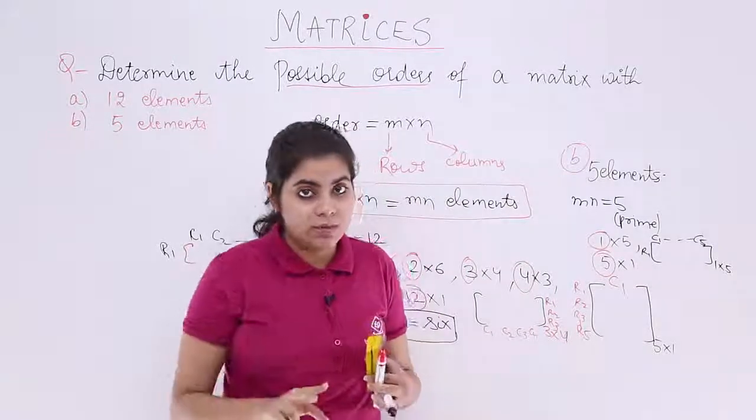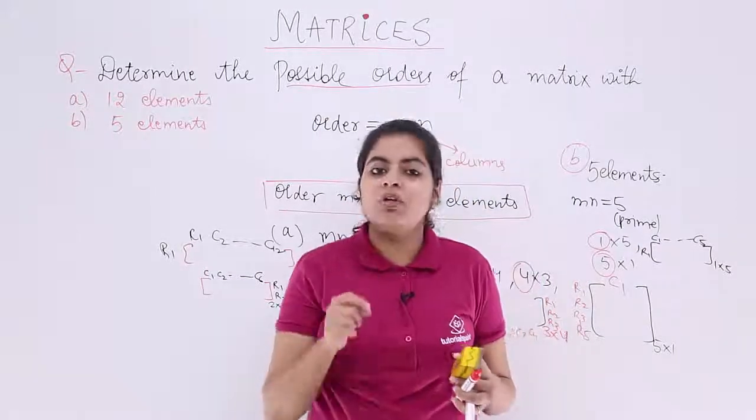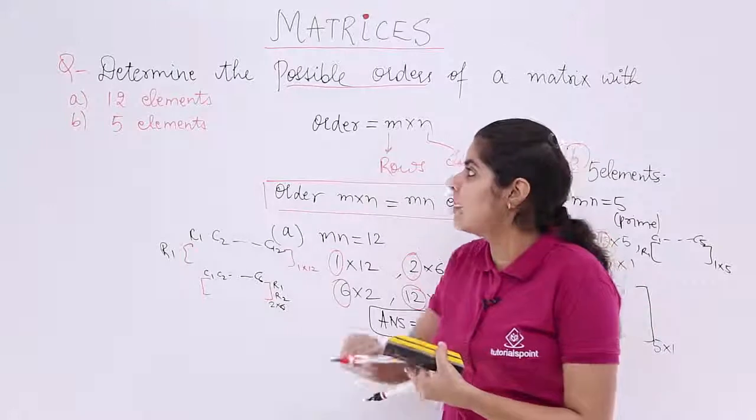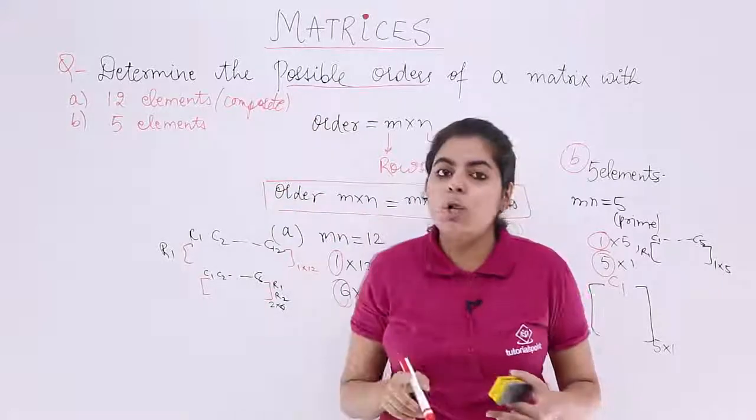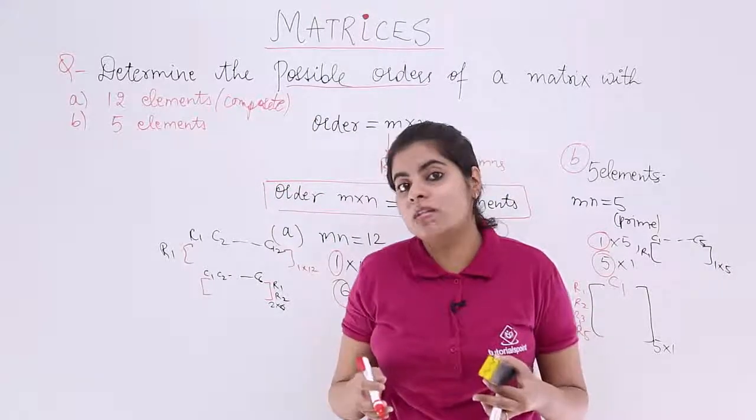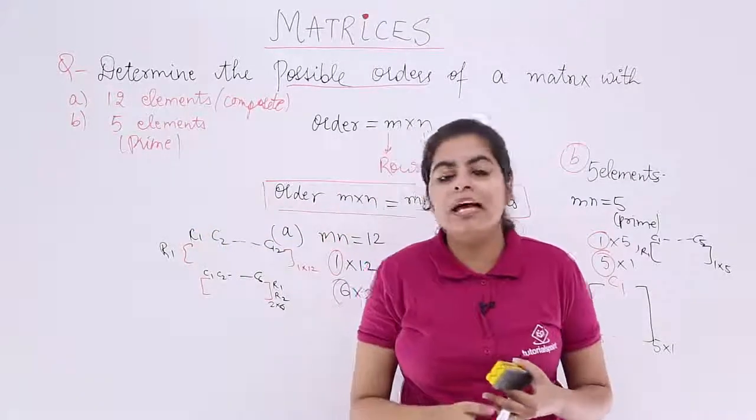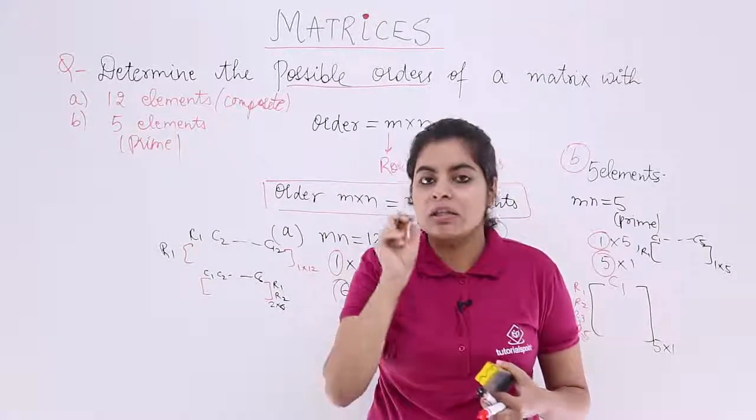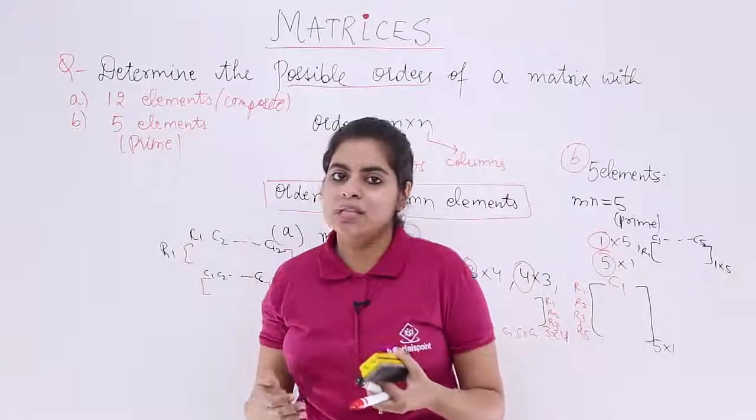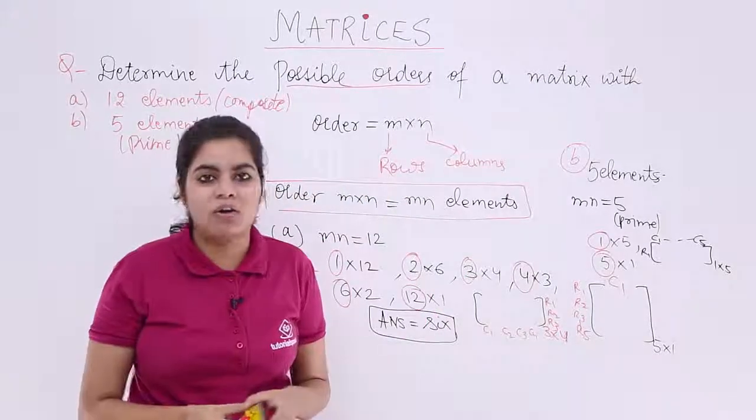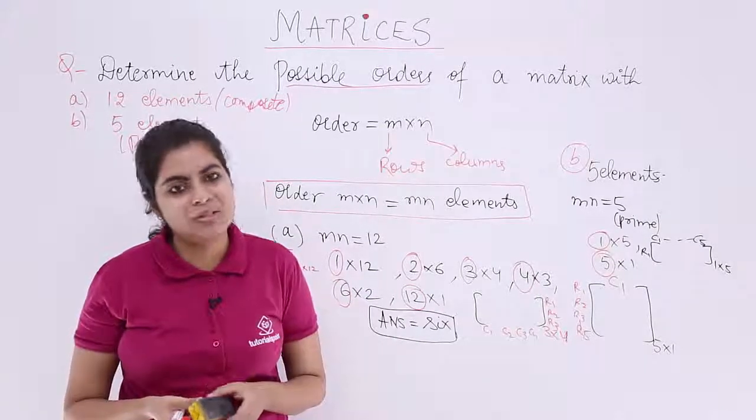So in this video, we saw 2 examples. But we understood one very important and big thing: that if you have number of elements as composite - remember 12 was a composite number - there is always more than 2 possible orders. But when you have a prime number as the number of elements, then only 2 possible orders exist. The number 1 and the number itself will make the possible orders. So this video was dedicated to numerical on order. In the next video also, we will be studying another variety, another problem based on order.